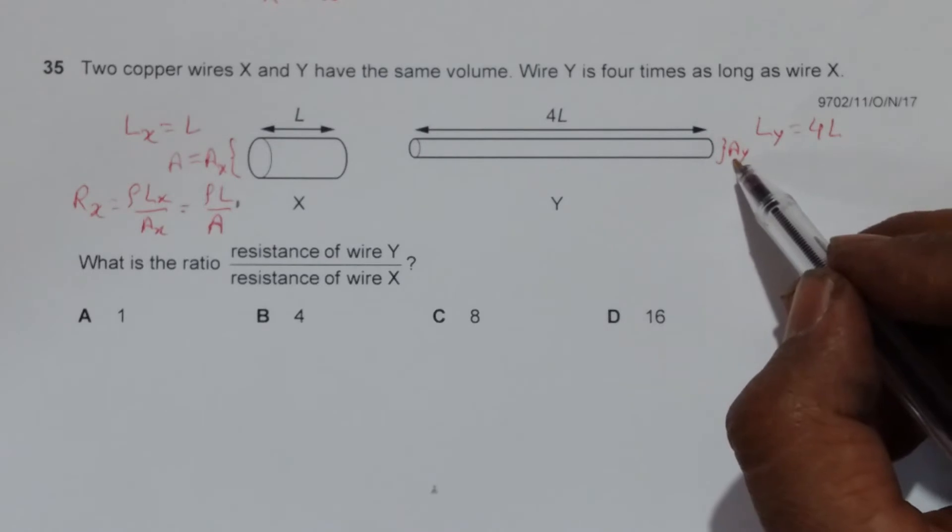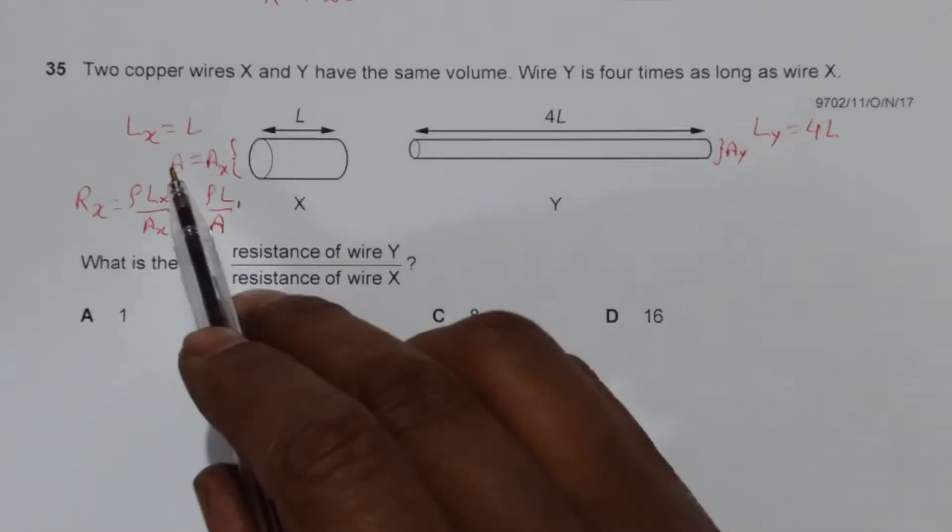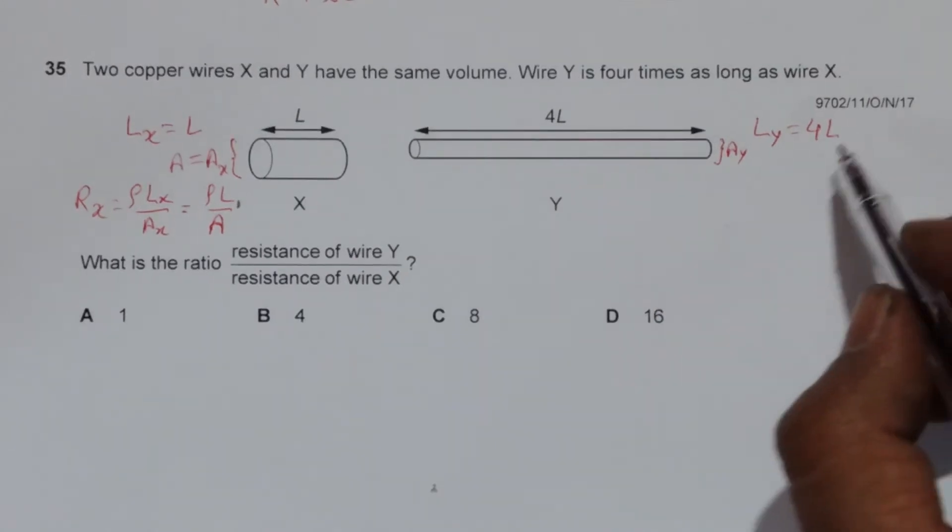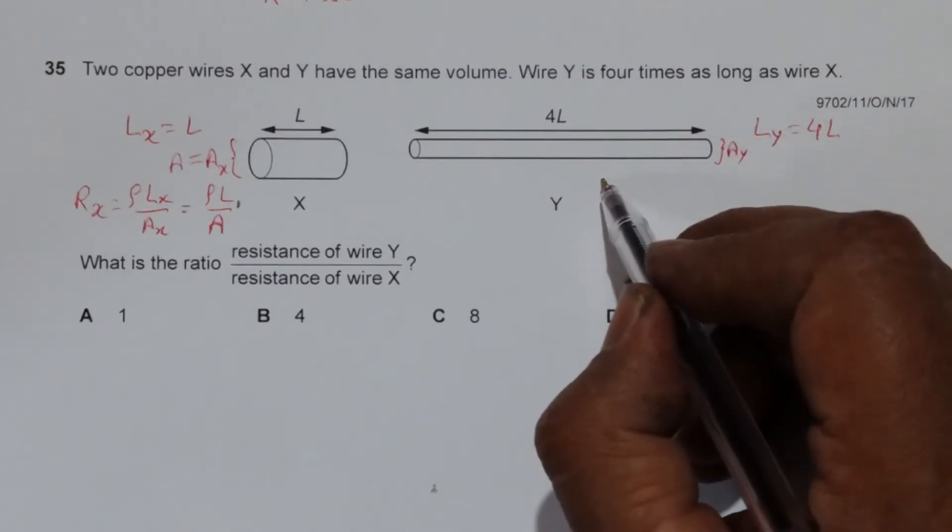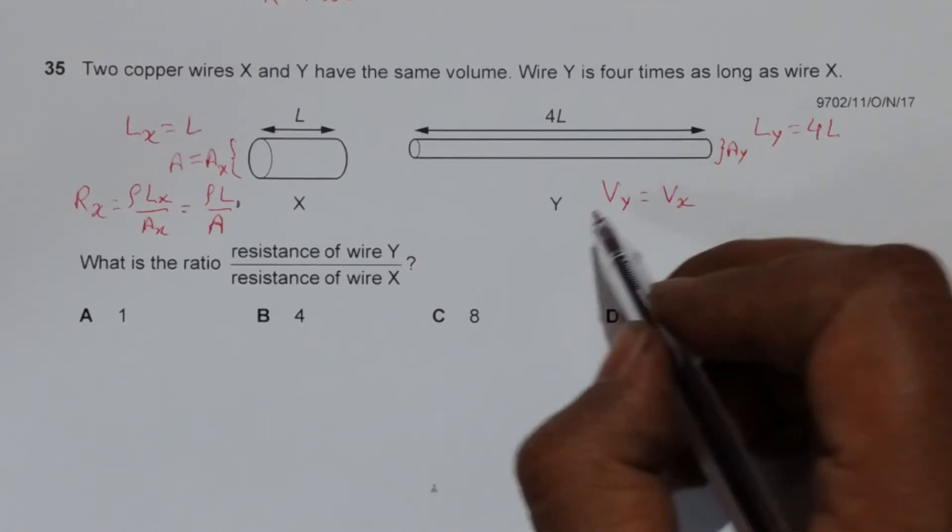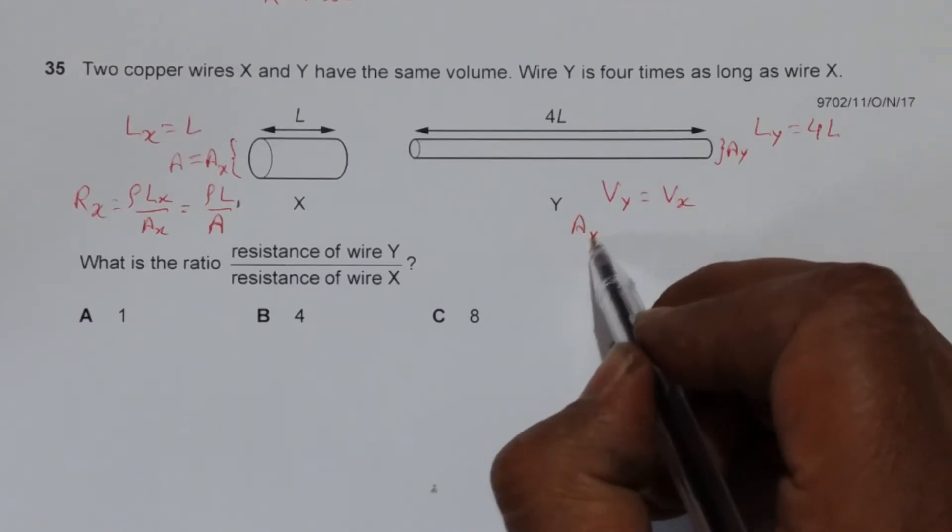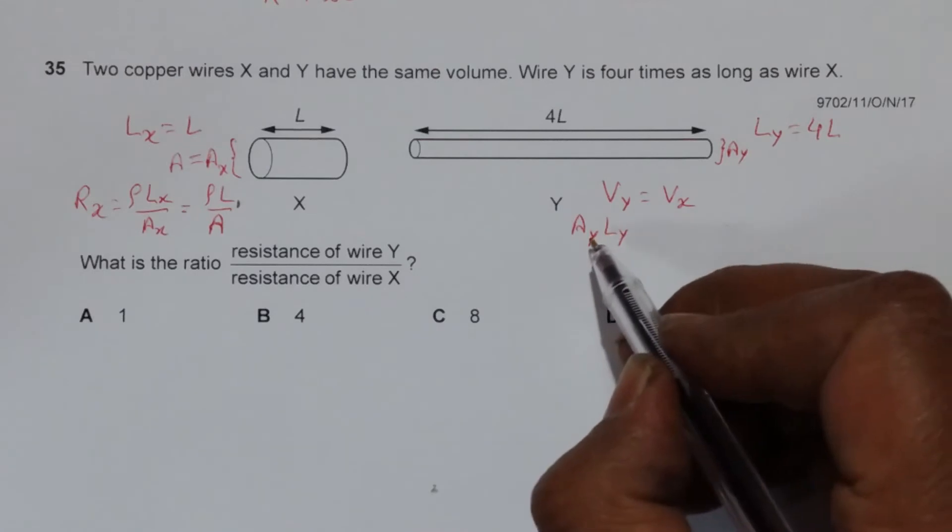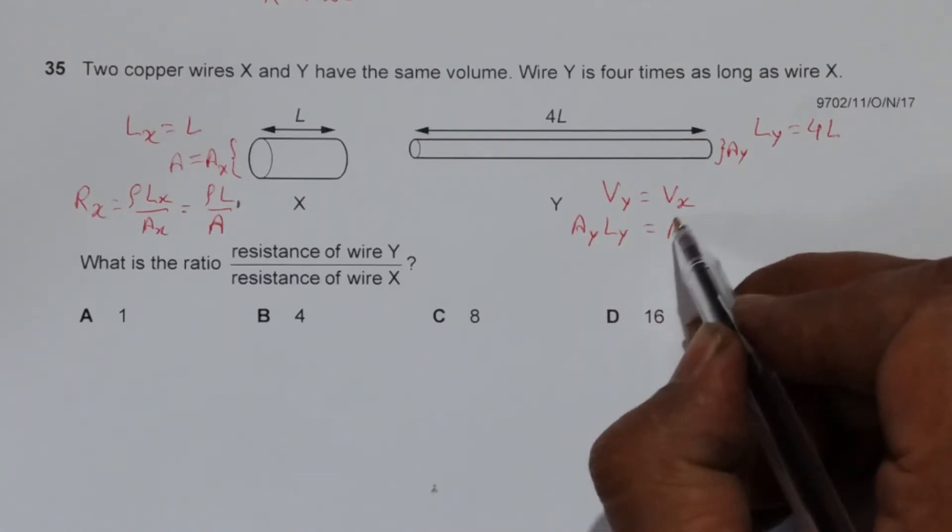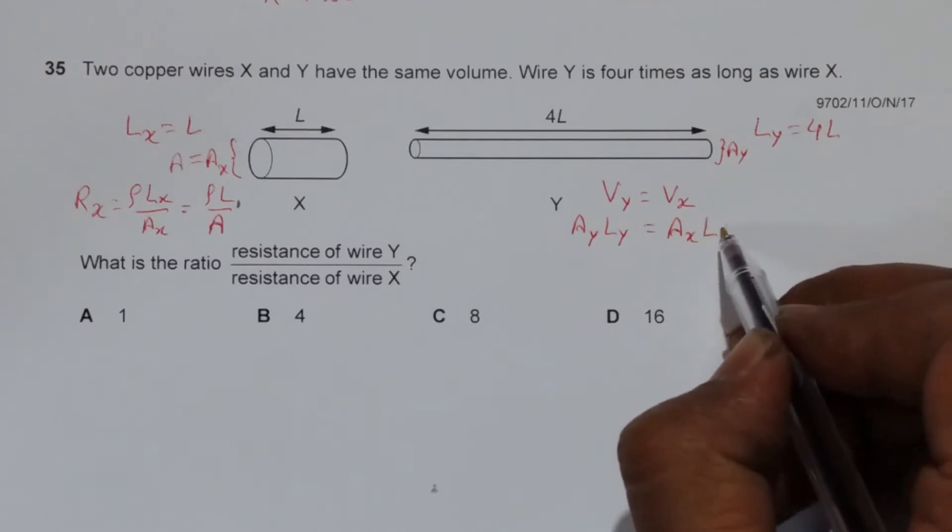Now we have to find A_Y in terms of A_X. Since their volumes are the same, we can have volume of Y equals volume of X, which gives us A_Y × L_Y equals A_X × L_X.